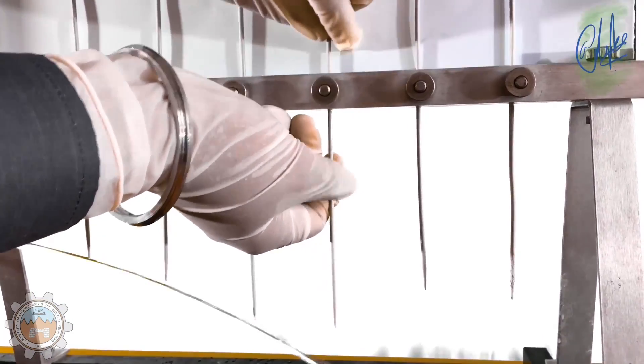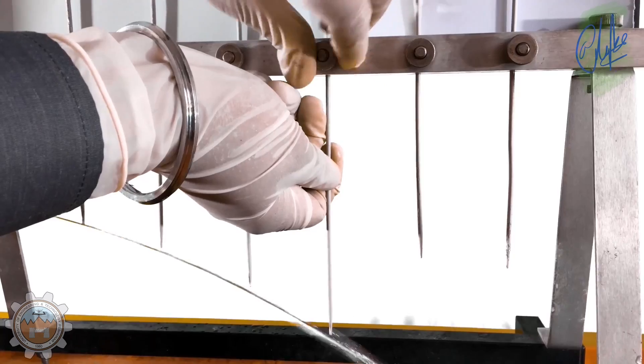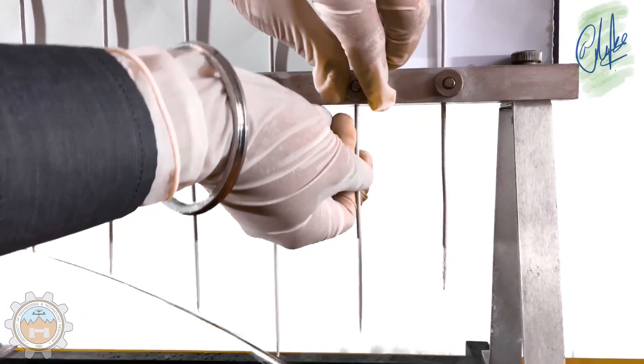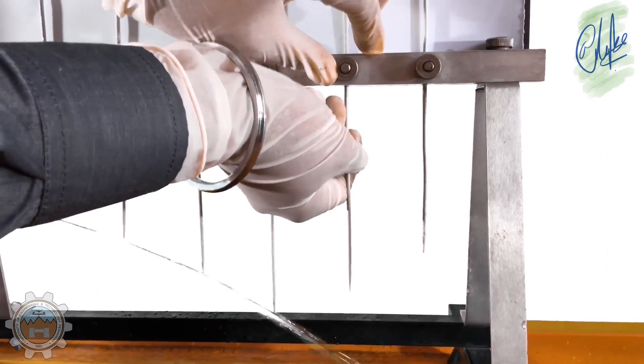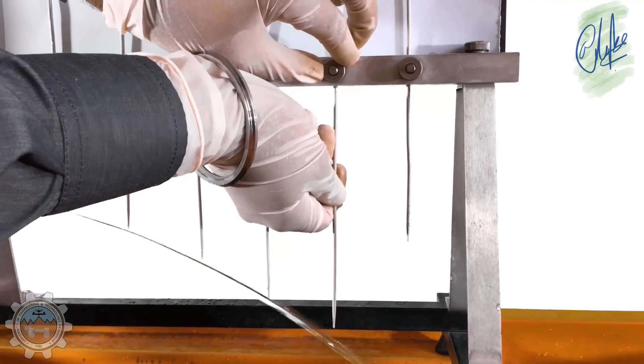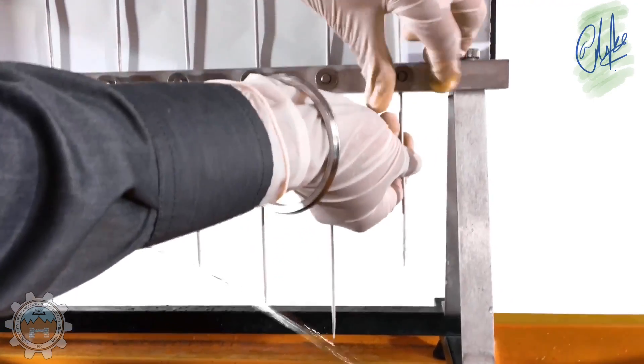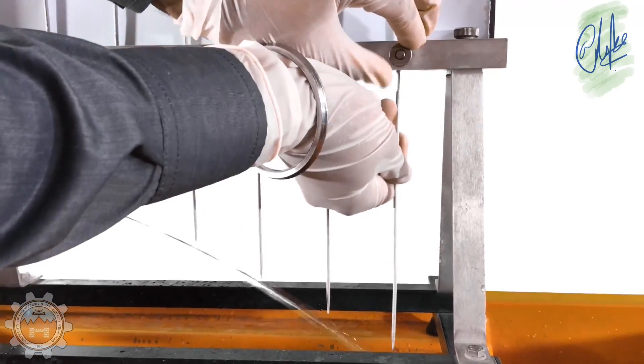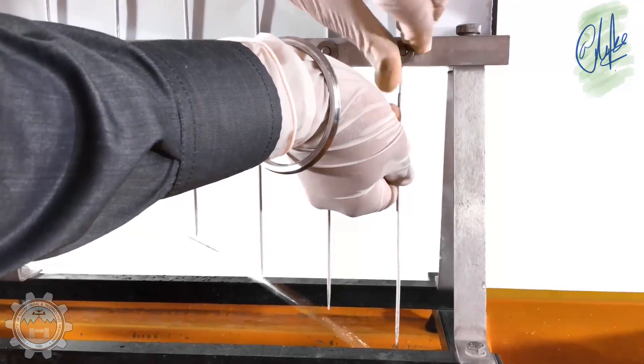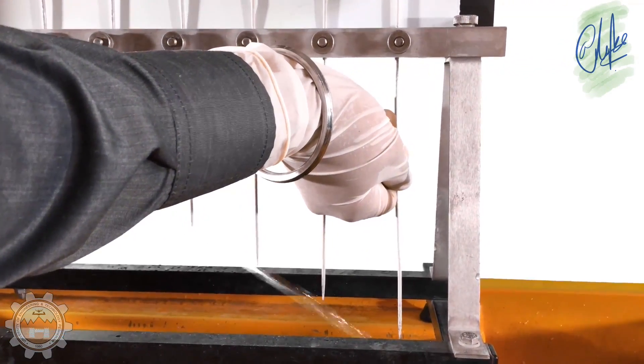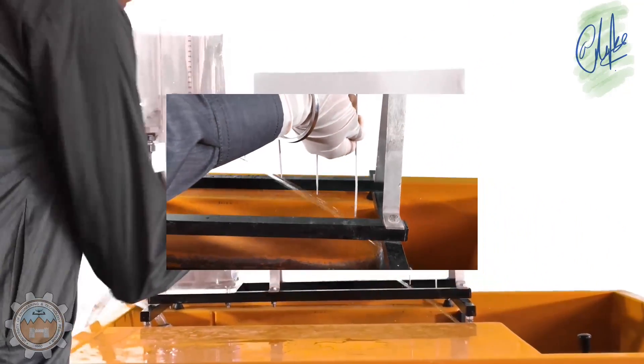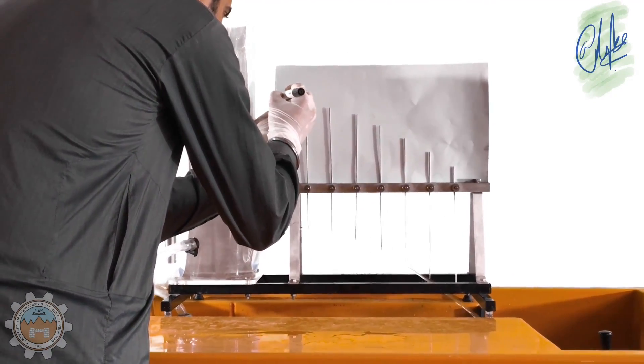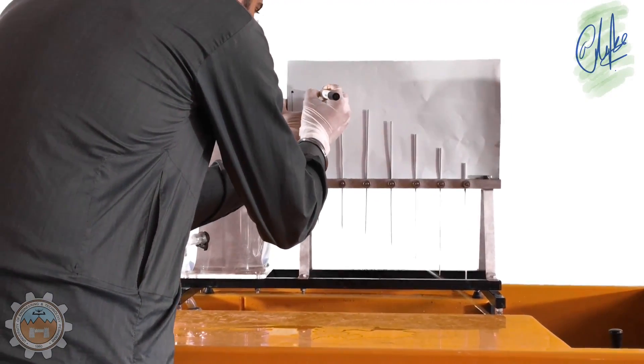After everything is setup, lower down the needles on the clamp board by using the screws in such a way that they touch the water jet top surface. Then with a marker or any kind of pen, mark the points on the clamp board on the paper.